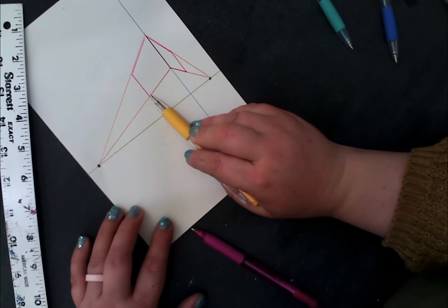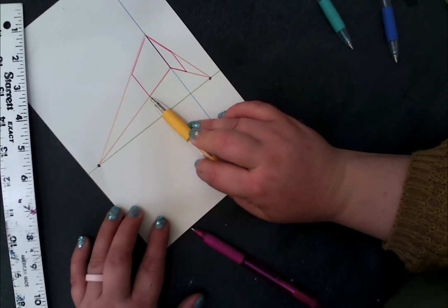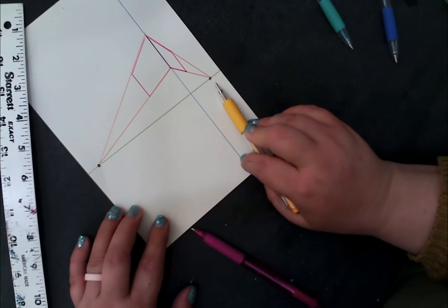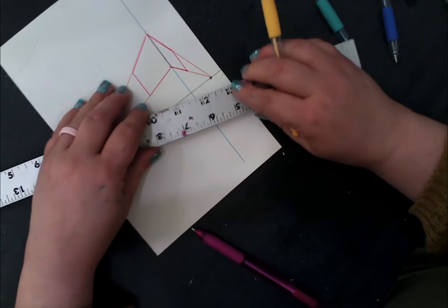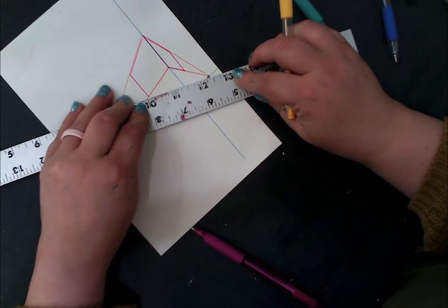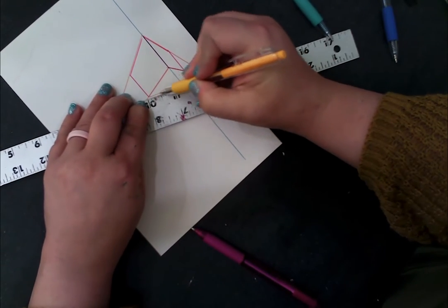This corner is on the left side of my station point. It's going to go back to the opposite vanishing point. Now I can use my pink pen to create my true bottom.